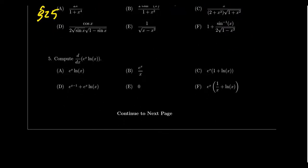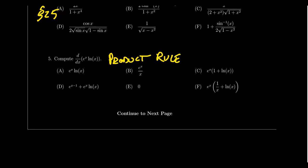Question number five asks you to take the derivative of e to the x times the natural log of x. What you will need on question five is knowledge of the product rule, to compute the derivative of a product. You also need to know how to take derivatives of exponentials and logarithms. While the product rule will be guaranteed, other techniques like logarithms, power functions, or trig functions could also appear. The product rule was introduced in lecture 20.